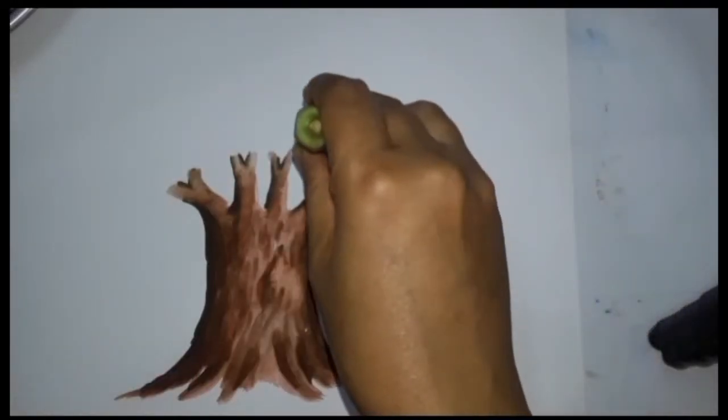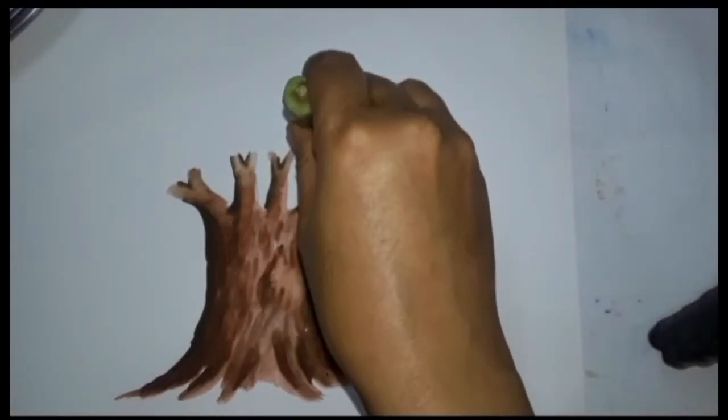To make white flowers on the tree we have to put green color on our lady finger. Now we will take impressions of our lady finger on our sheet.